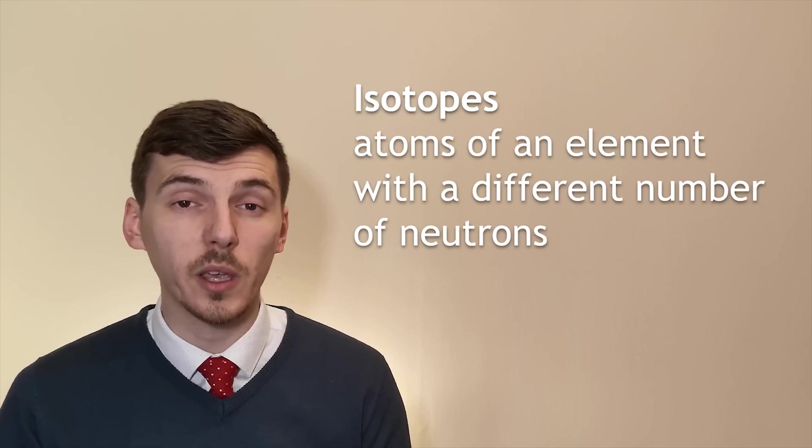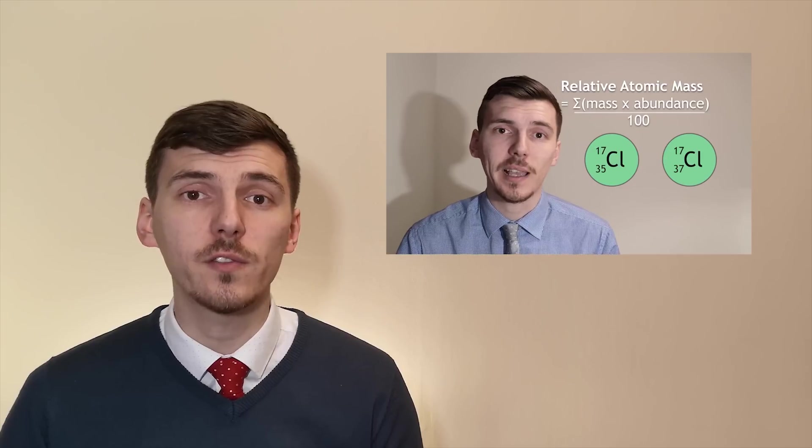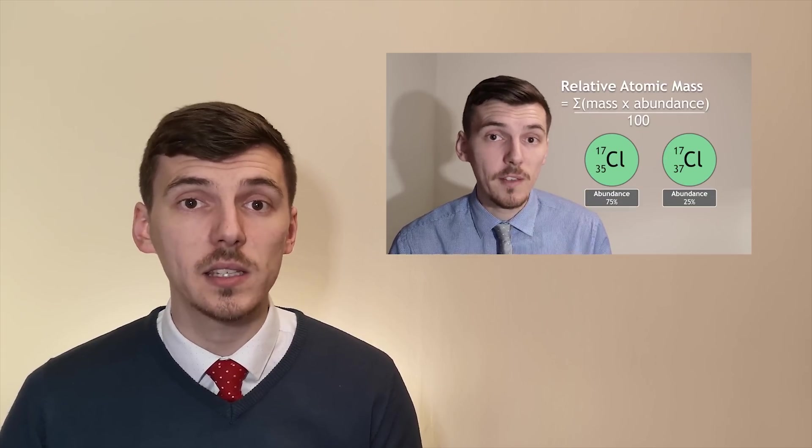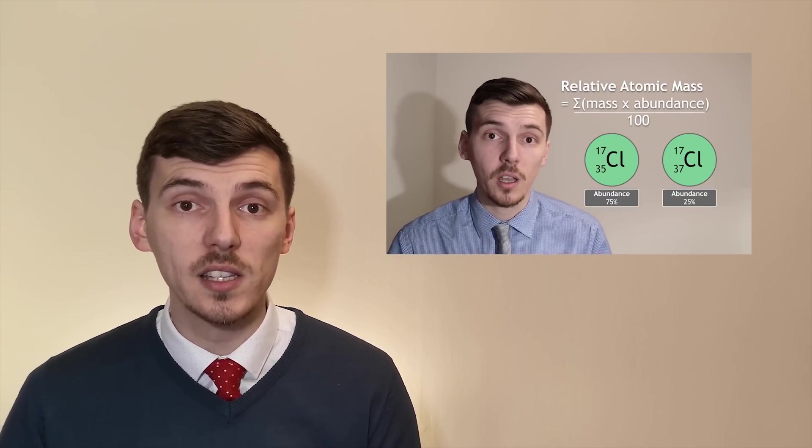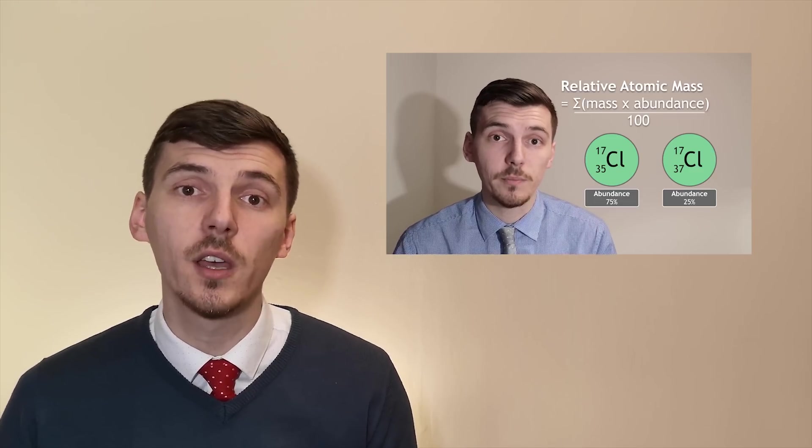Mendeleev was however unable to correctly order the elements in the periodic table. This was because at the time we weren't aware of isotopes. We know from our previous video that relative atomic masses need to be calculated using the relative abundances of the isotopes, something that Dmitry Mendeleev didn't know.